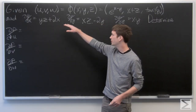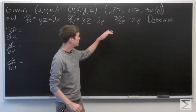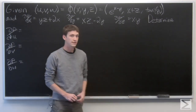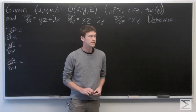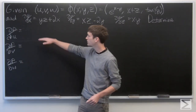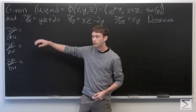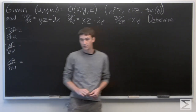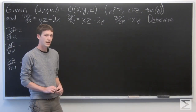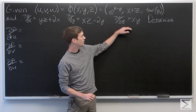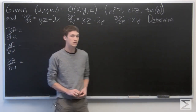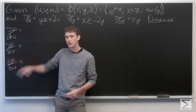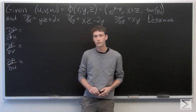In this problem, we're given a function phi of x, y, z. The first component is e to the x minus y, the second component is x plus z, and the third component is the inverse tangent of y. We're also given that for some function p, the partial derivative of p with respect to x is yz plus 2x, the partial derivative of p with respect to y is xz minus 2y, and the partial derivative of p with respect to z is xy. We're asked to determine the partial derivative of p with respect to u, v, and w.